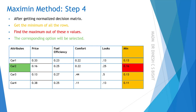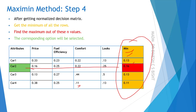Step 4: once we have the normalized decision matrix, get the minimum of all rows. In the first row, values are 0.33, 0.23, 0.22, 0.13, so the minimum is 0.13. In the second row, the minimum is 0.16. In the third row, the minimum is 0.13. In the fourth row, the minimum is 0.11.